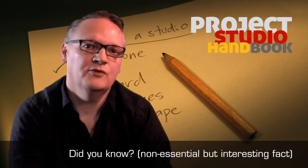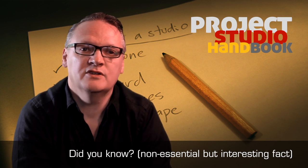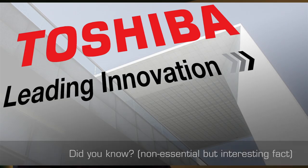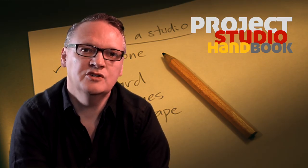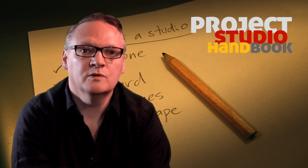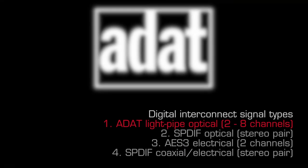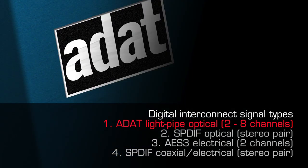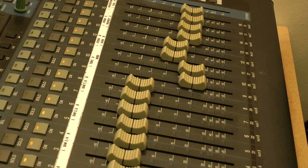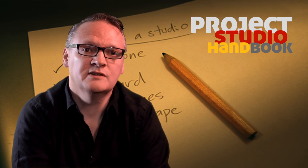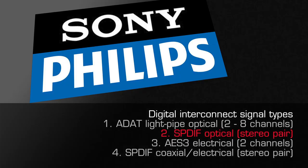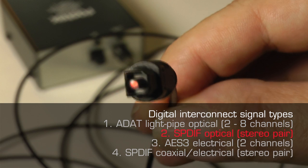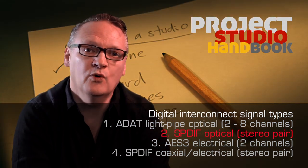The TOS-link format was invented by Japanese hi-fi manufacturer Toshiba to enable digital connection of their CD players and digital amplifiers, but today it is used for two other common digital optical signal formats. The first is ADAT, invented by Alesis to allow them to connect their revolutionary digital 8-track tape recorders to digital mixing desks. The second was a collaboration between Sony and Philips to create an optical version of their coaxial SPDIF format.